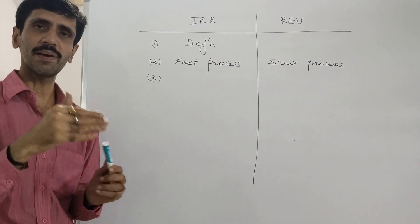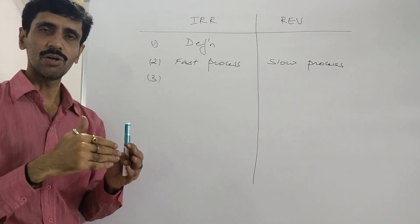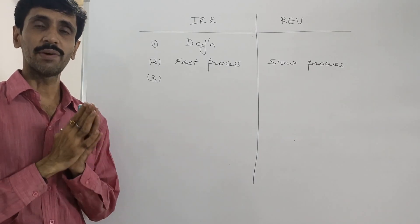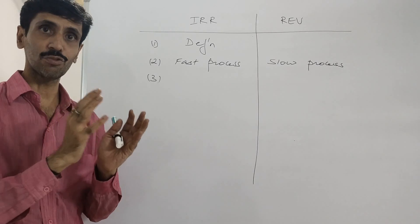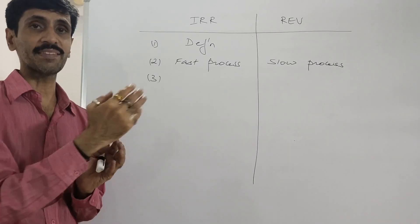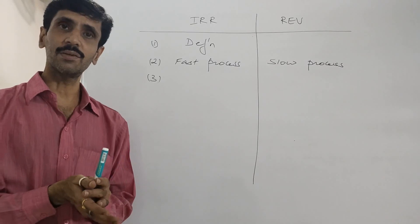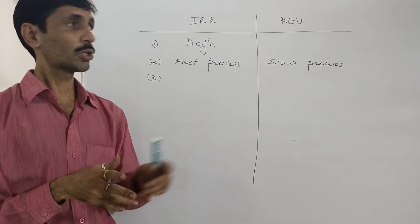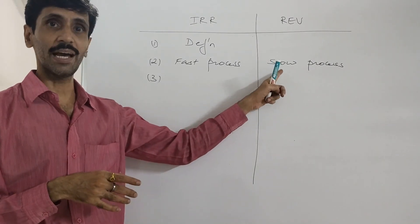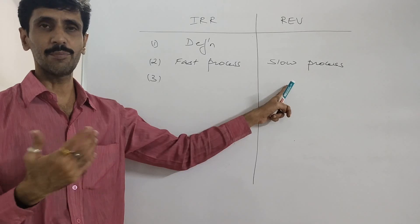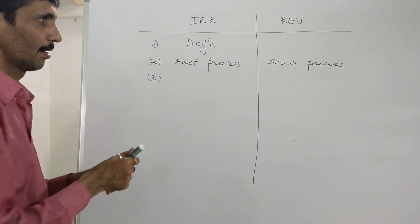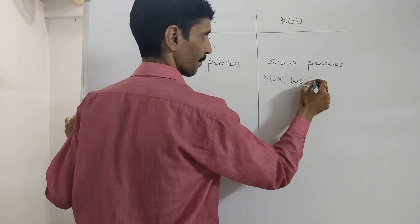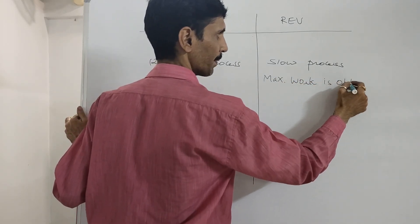When a slow process happens, the work done — the efficiency of the work done — is high. Whenever the process is taking place slowly, the efficiency of that process is high. Efficiency is measured in terms of the amount of work done. So when efficiency is high, the amount of work done is going to be more. Maximum work is done and maximum work is obtained.